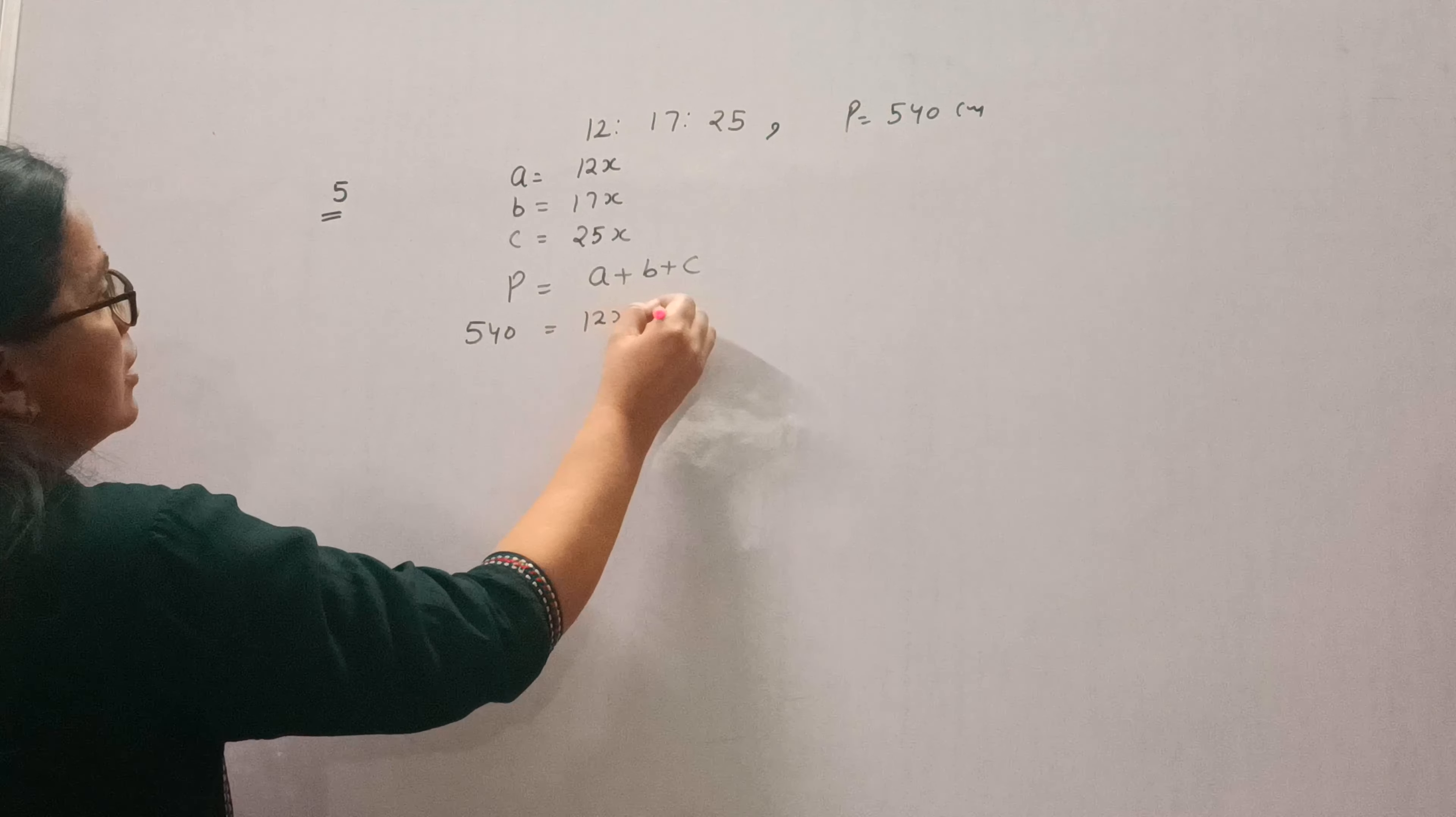Now A will be 12 into 10, that is 120 cm, B will be 170 and C will be 250 cm. Now we will find its area.